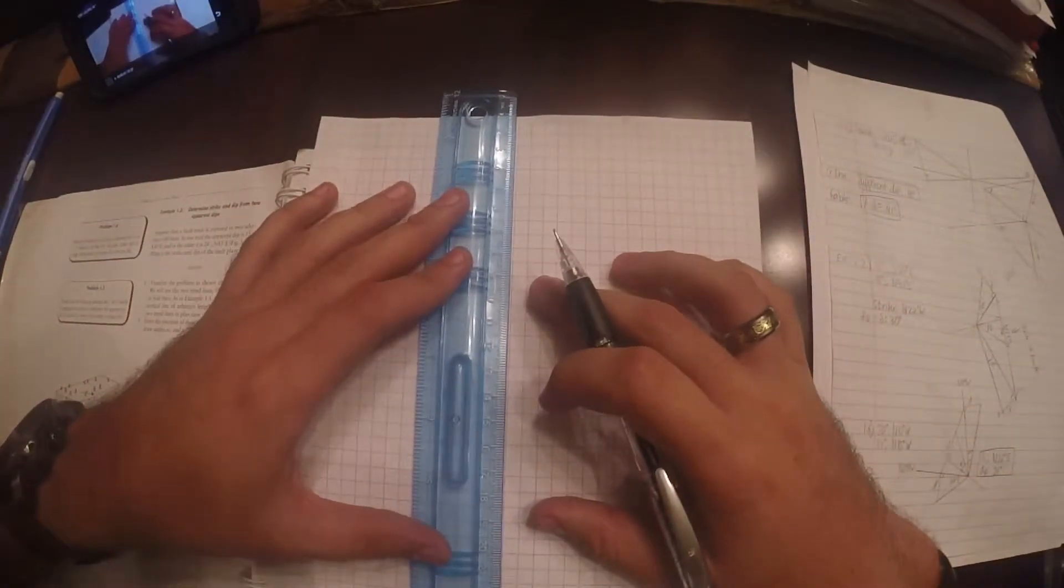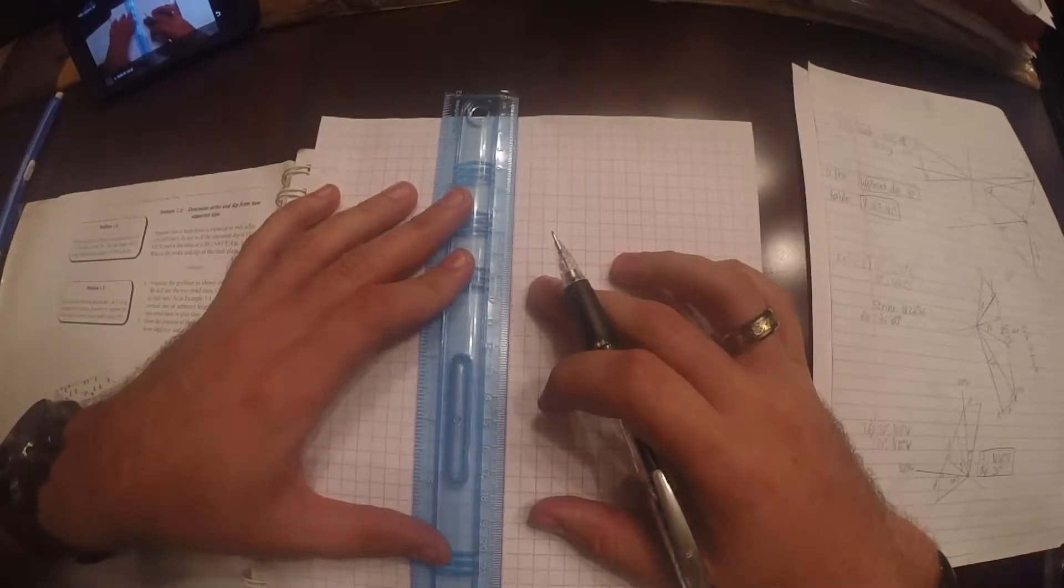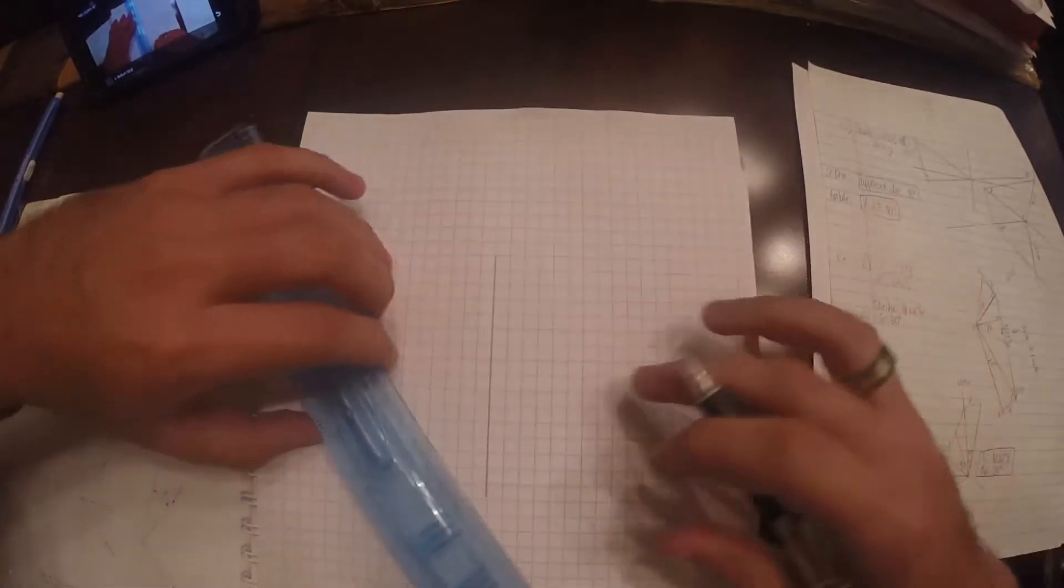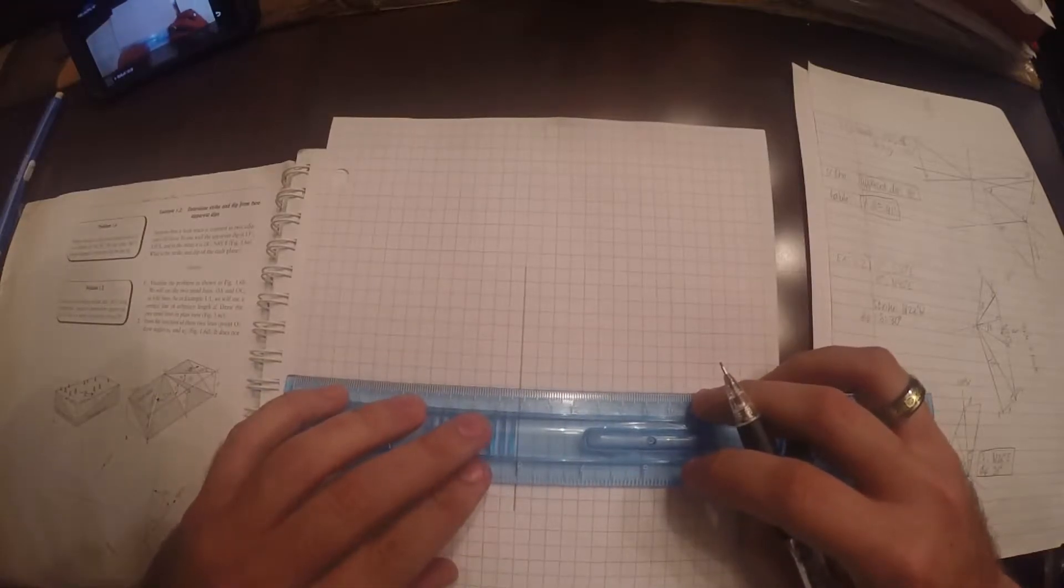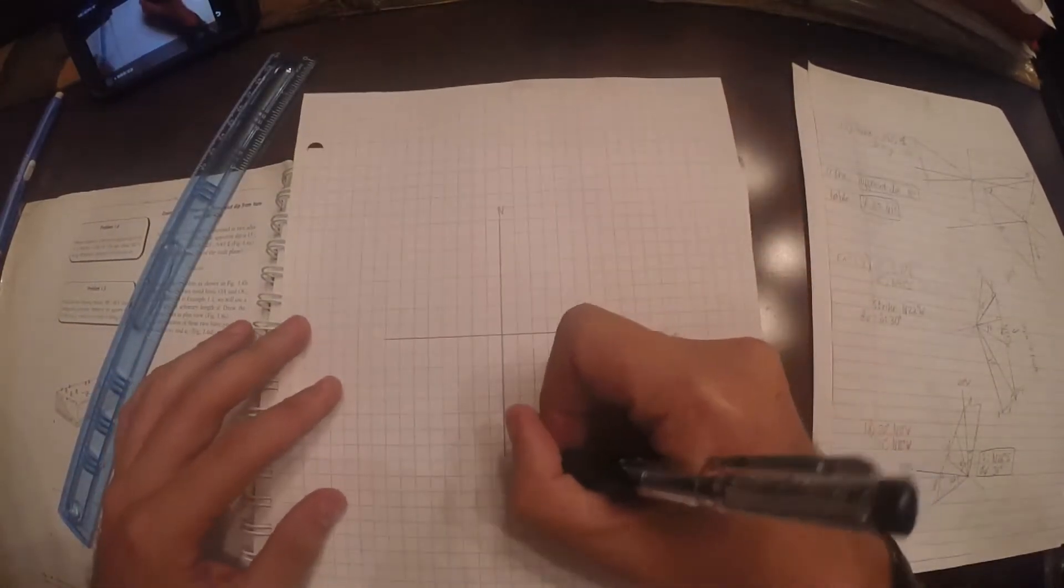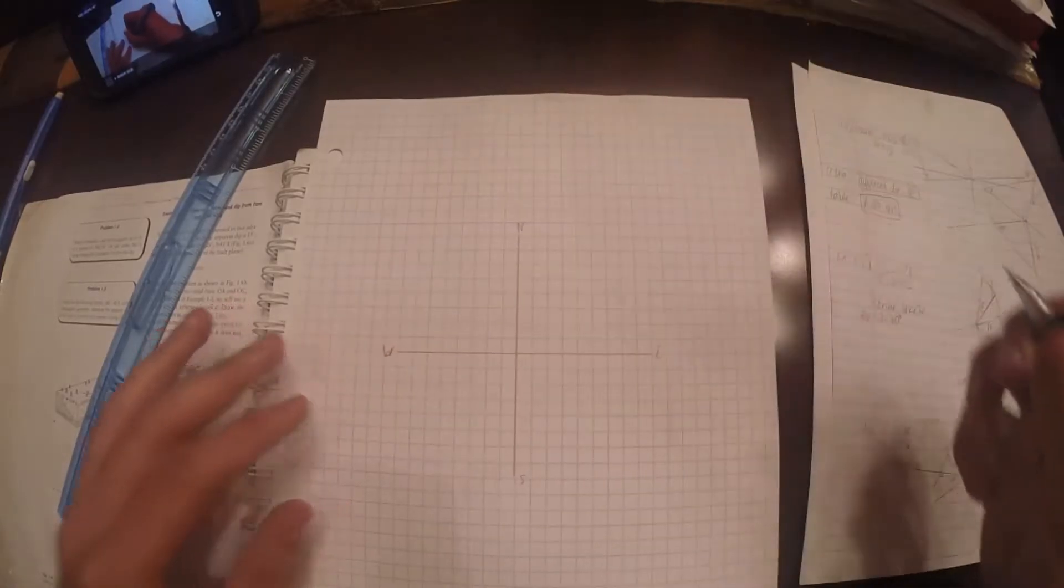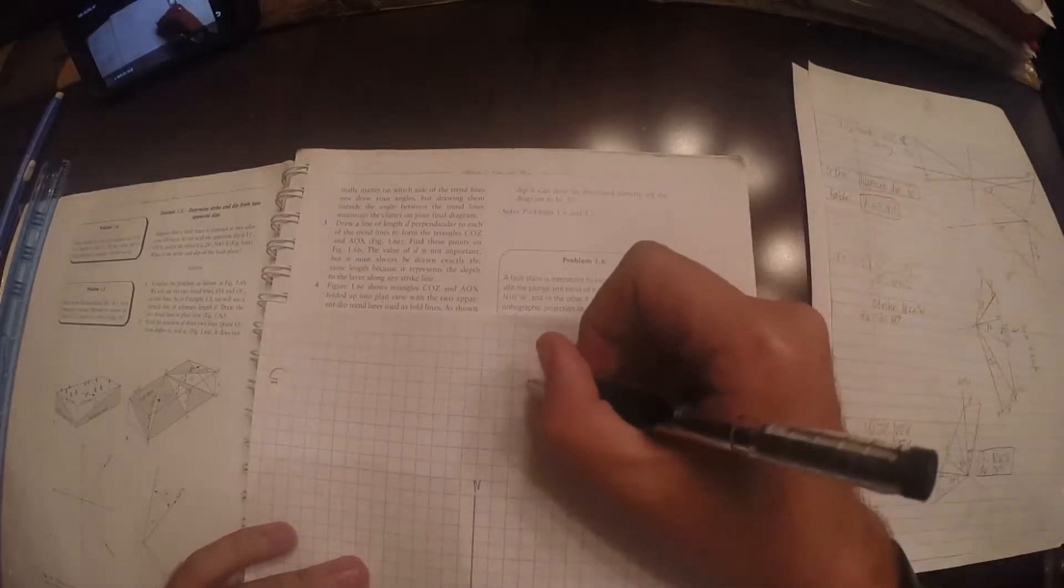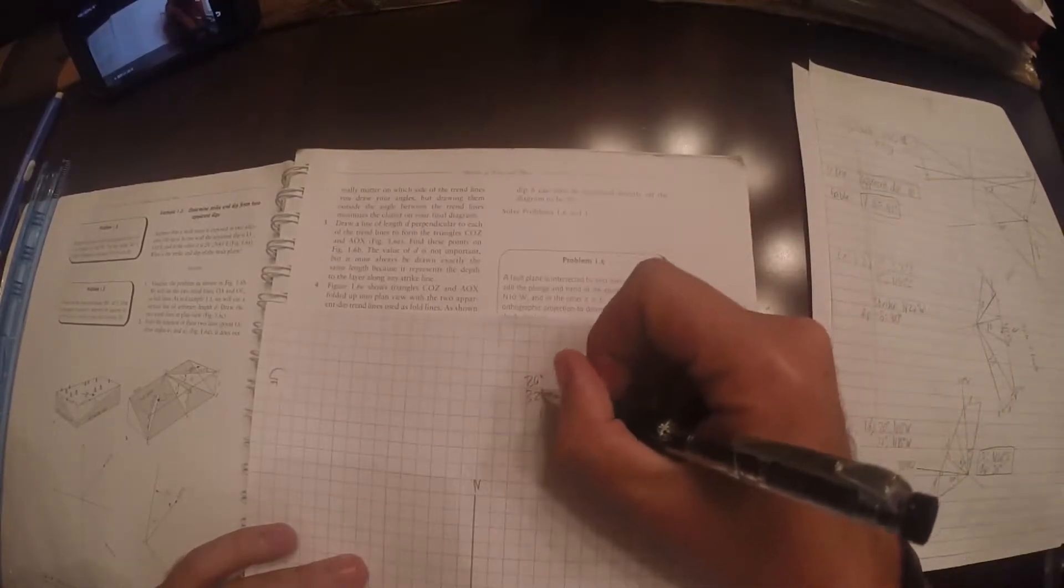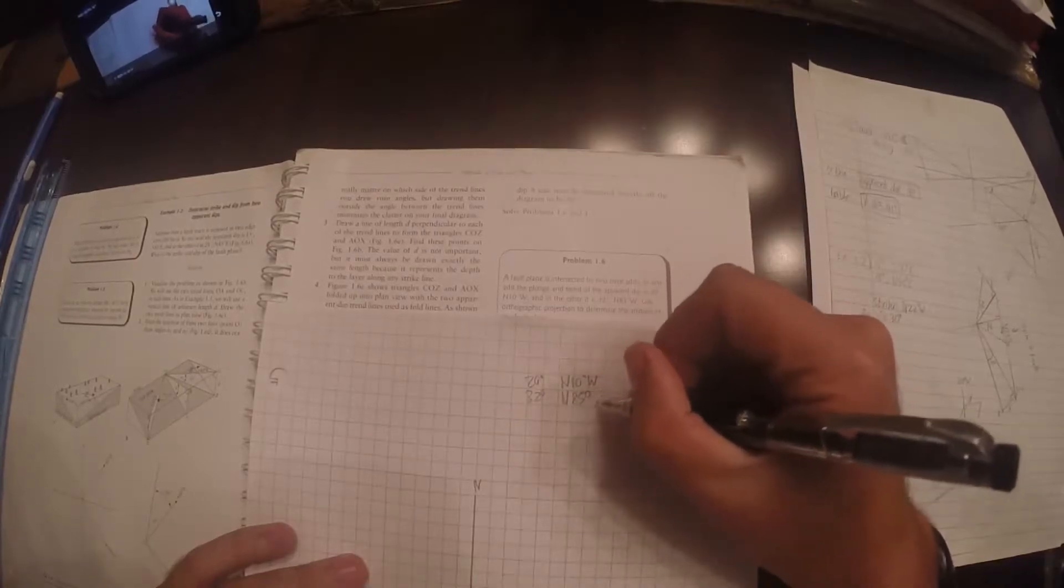So what we're going to do this time, again, you want to have a north south east west thing. I suppose you don't have to, but I think it helps. So let me just write them down so I don't have to keep going through. So the first one is 20 degrees north 10 degrees west. The other is 32 degrees north 85 degrees west.